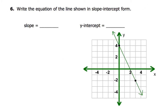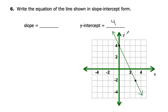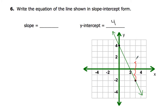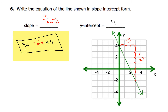Example 6 should be very straightforward. First, identify the y-intercept from the graph — you can pick that off very easily. The y-intercept is 4. For the slope, use the two given points: counting gives a rise of 6 and a run of negative 3 since we move to the left. Reducing 6 over negative 3 gives a slope of negative 2. So the equation is y equals negative 2x plus 4.